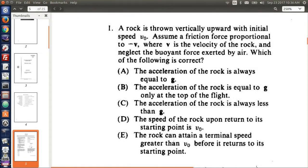A rock is thrown vertically upward with initial speed V0. Assume a friction force proportional to the negative of the velocity vector, where the velocity vector is the velocity of the rock, and neglect the buoyant force exerted by air. Which of the following is correct?